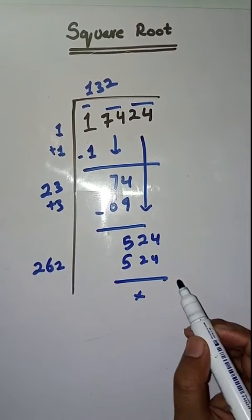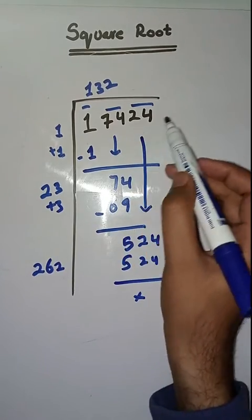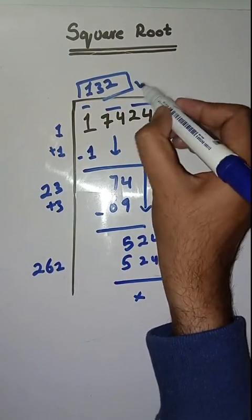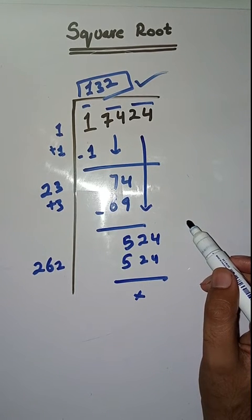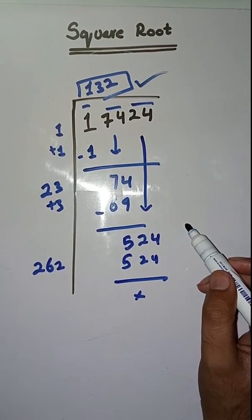So square root of 17424 is 132. Hopefully you like this video. If you really did, please like, share, and subscribe my YouTube channel. If you have any question you can ask in comment section. Thank you.